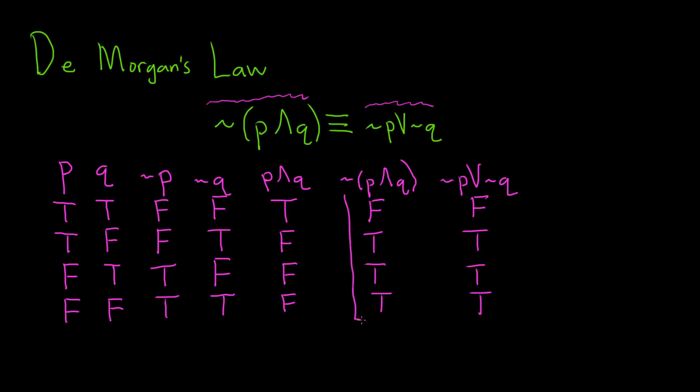And look at this. These are exactly the same, right? Row by row, false, false, true, true, false, true, true, true, false, false, we're good. So these are logically equivalent.